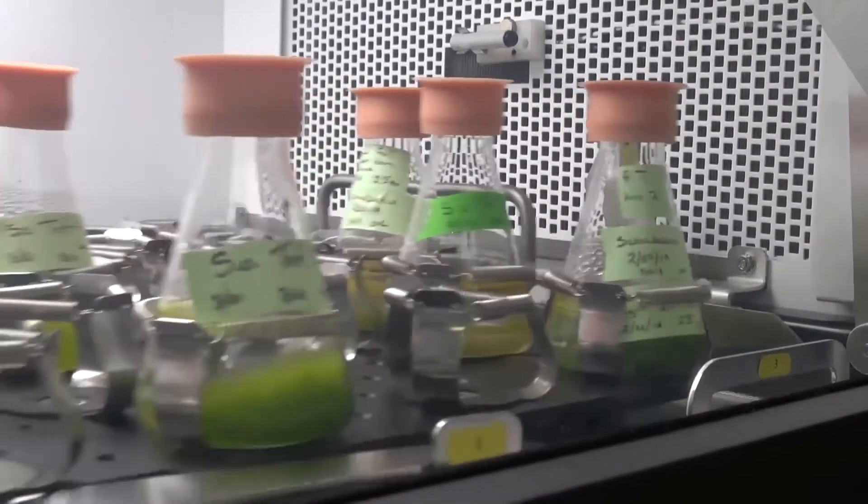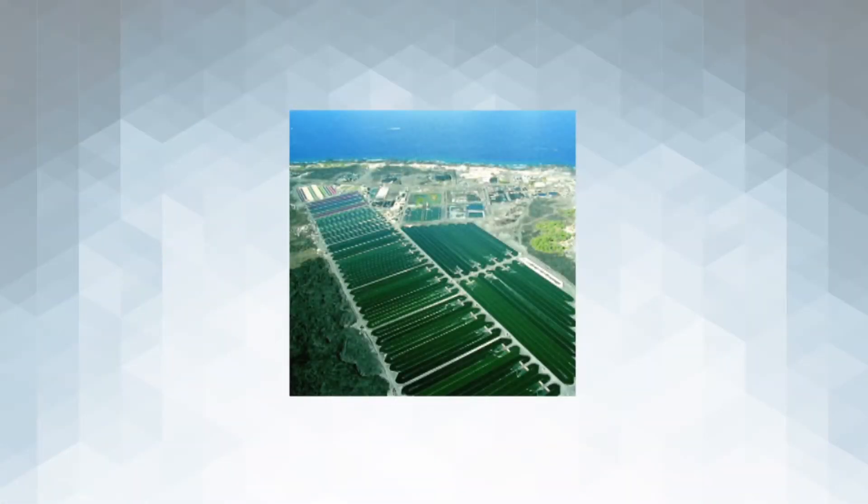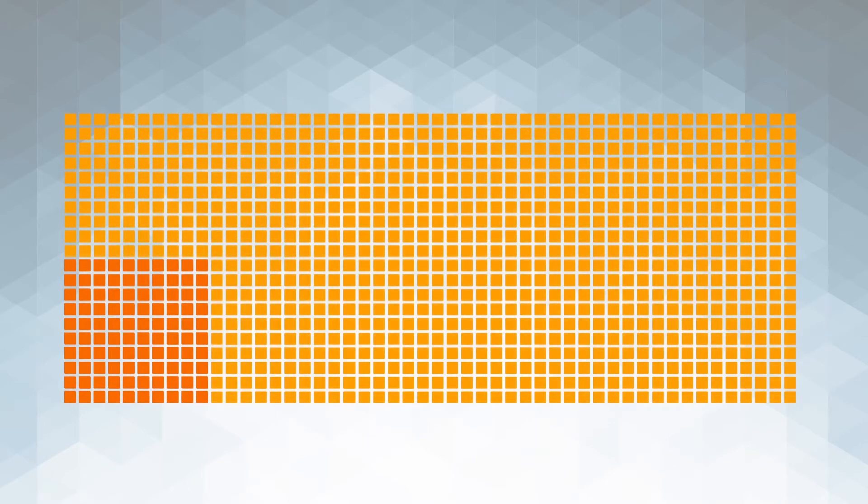So, is algae easy to grow? Currently, we're farming algae at about a 100-acre scale. Those are some of the biggest algae farms that exist in the world today. In order to make algae practical for fuels, it's going to have to be grown on thousands of acre scales, much like the large farms you see today for the production of our foods and grains.